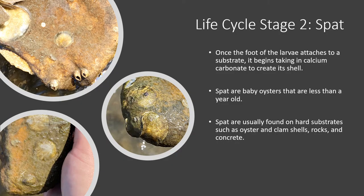Once the larvae permanently attaches itself to a substrate, it begins sequestering calcium carbonate to create its shell. The moment the larvae begins building its shell, it transforms from larvae into spat. Spat is the scientific term for baby oysters. The best substrate for spat to settle on is oyster shell. In fact, oyster reefs are made up over time from spat attaching to other oysters, dead or alive, and growing off them to form clumps and reefs.